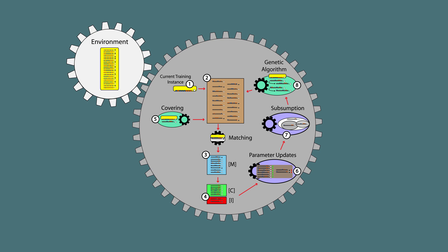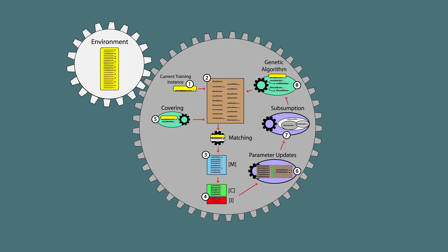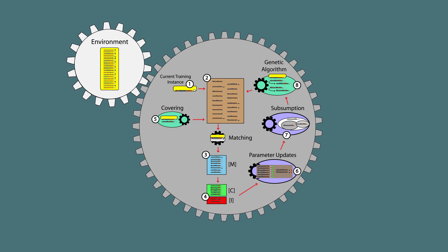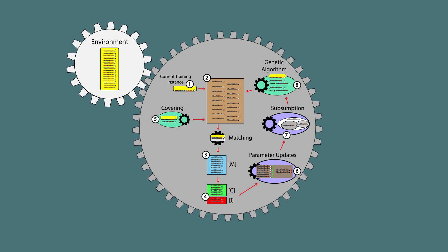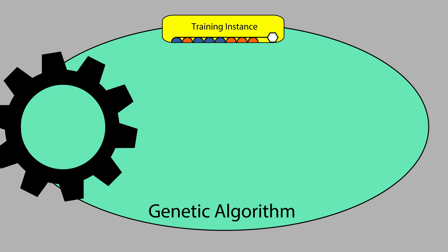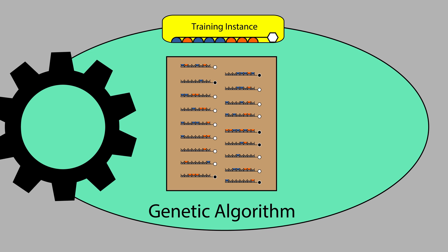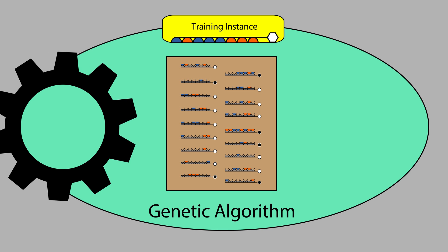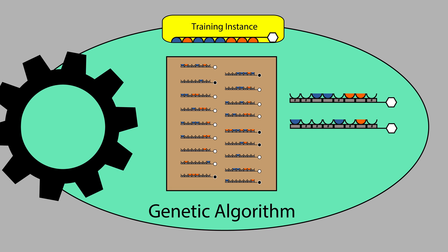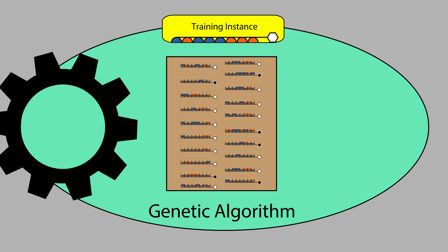The next step applies a simple genetic algorithm as the second of the two rule discovery mechanisms. While other heuristics could be used to discover rules, the GA is most commonly used. The LCS genetic algorithm is highly elitist, meaning that each learning iteration, the vast majority of classifiers are preserved in the population. In fact, only two new offspring rules are typically generated by the GA and added to the rule population each learning cycle.